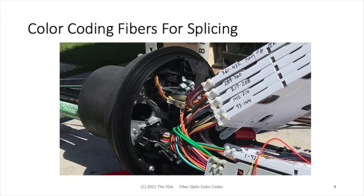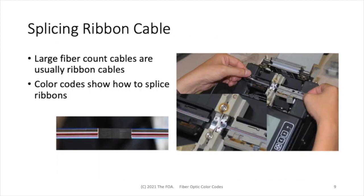With color codes, it's very systematic and easy to follow. Here's an example of splicing ribbon cable. Most large fiber count cables today are ribbon cables, and ribbons are typically spliced with color codes matched, as you can see from the splice in the small inset photograph. If you have to break out fibers, you'll actually split the ribbons and go to color code charts that tell you how splices are made from one ribbon or one split ribbon to another.